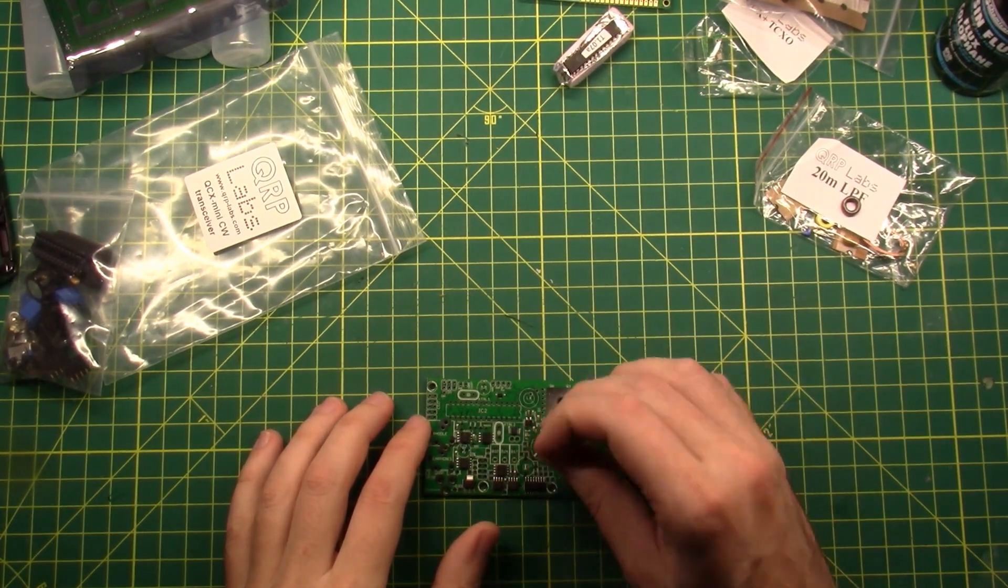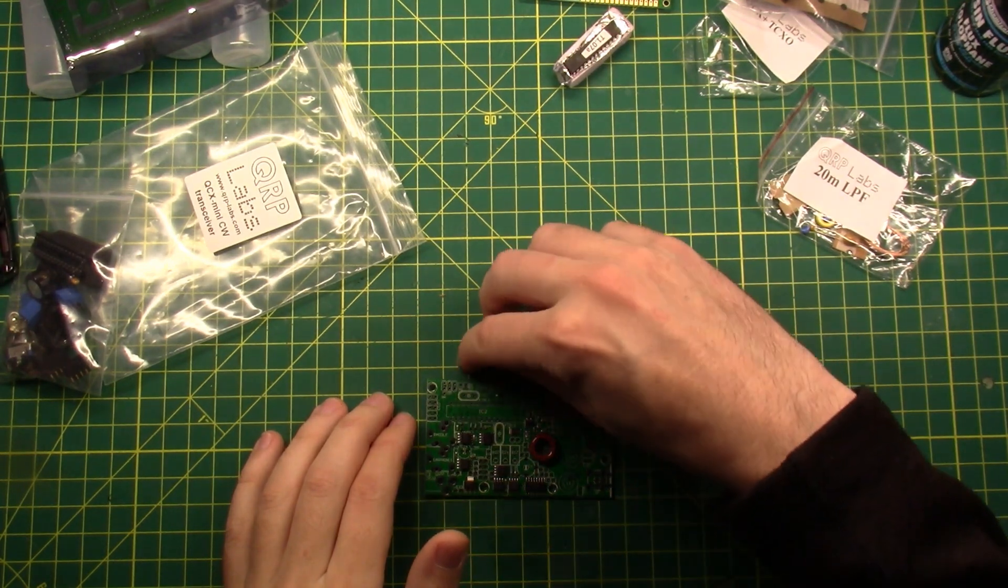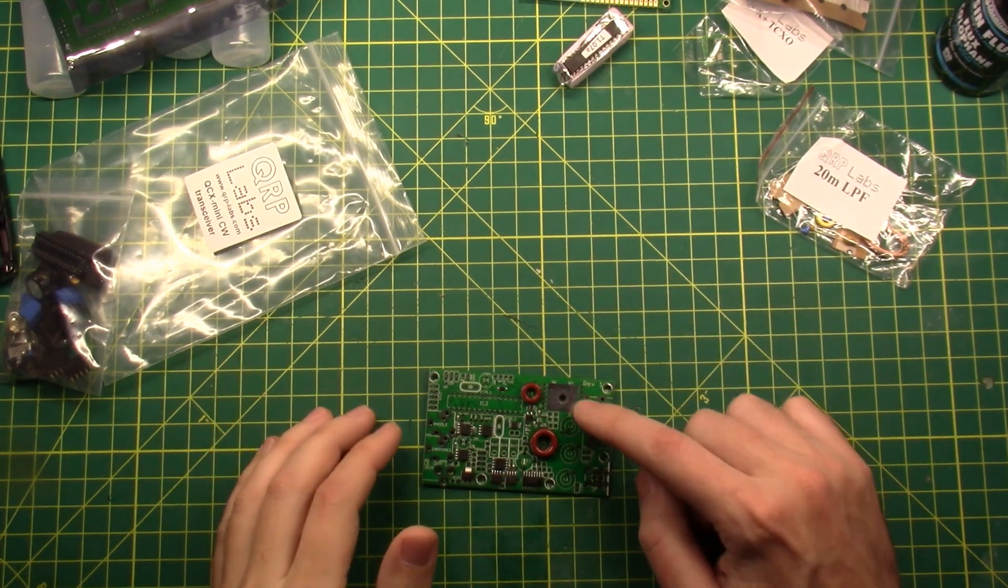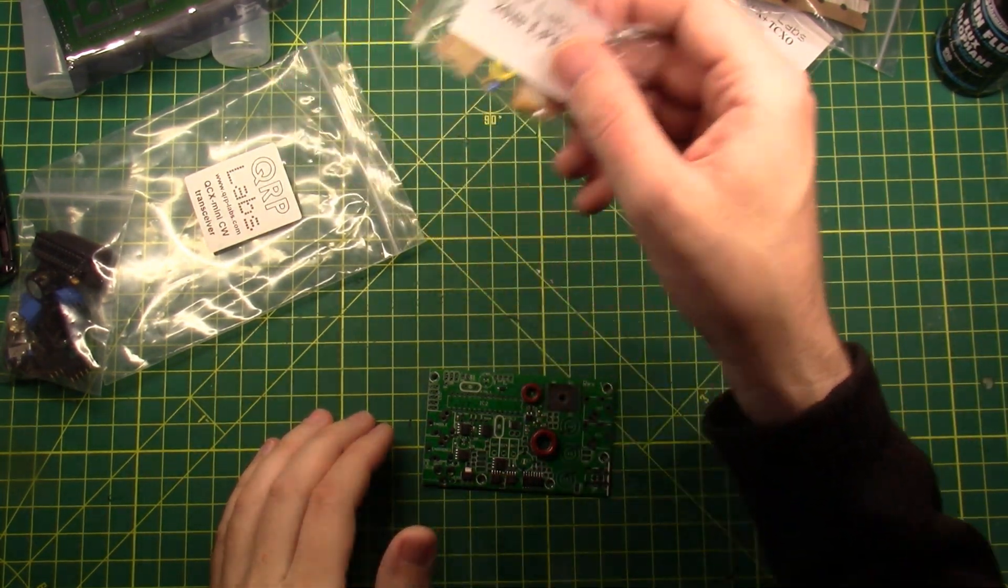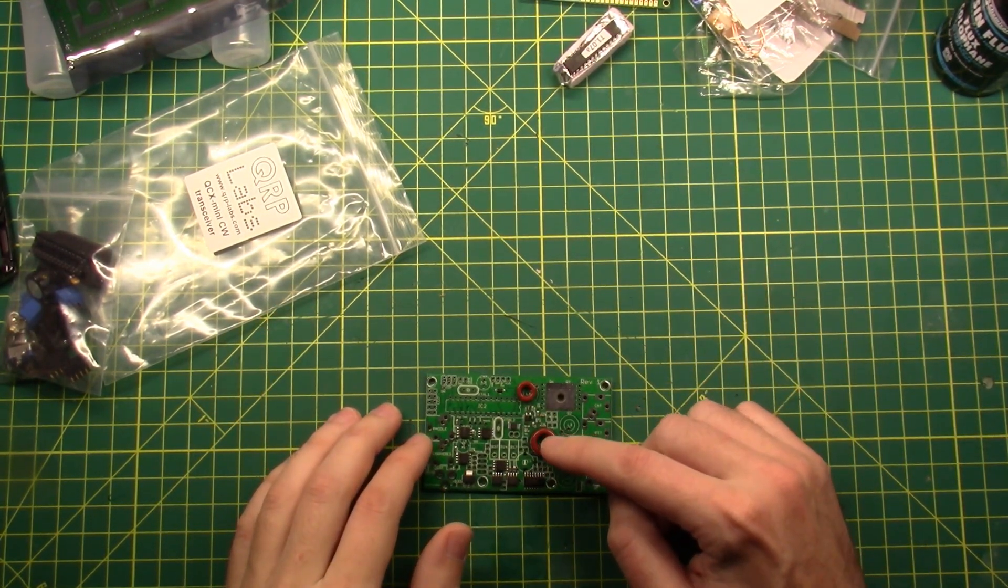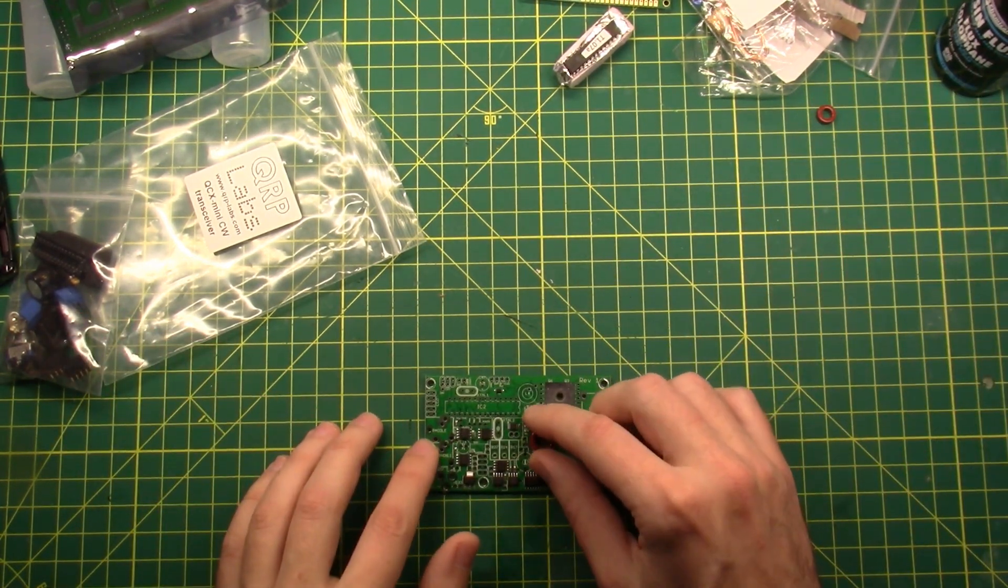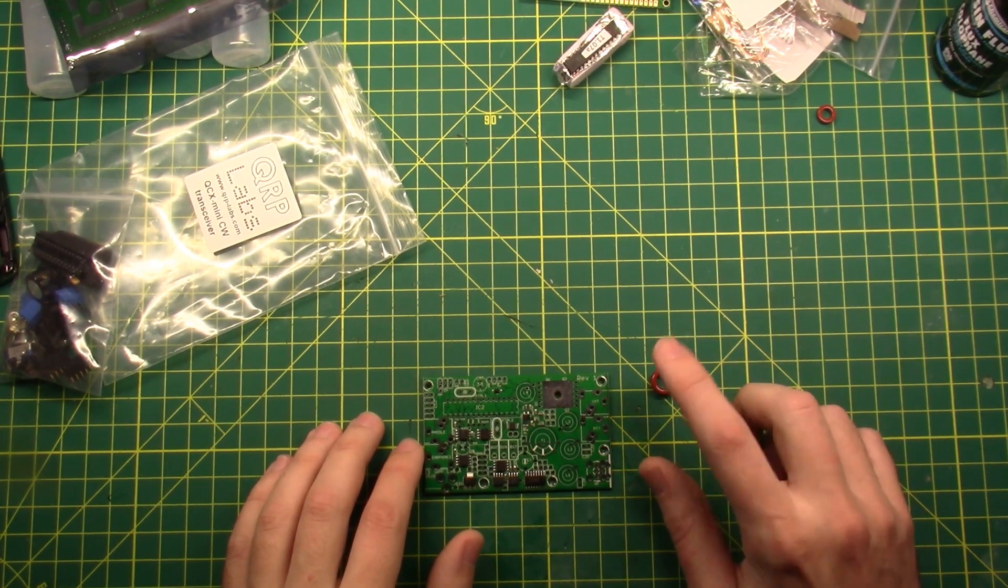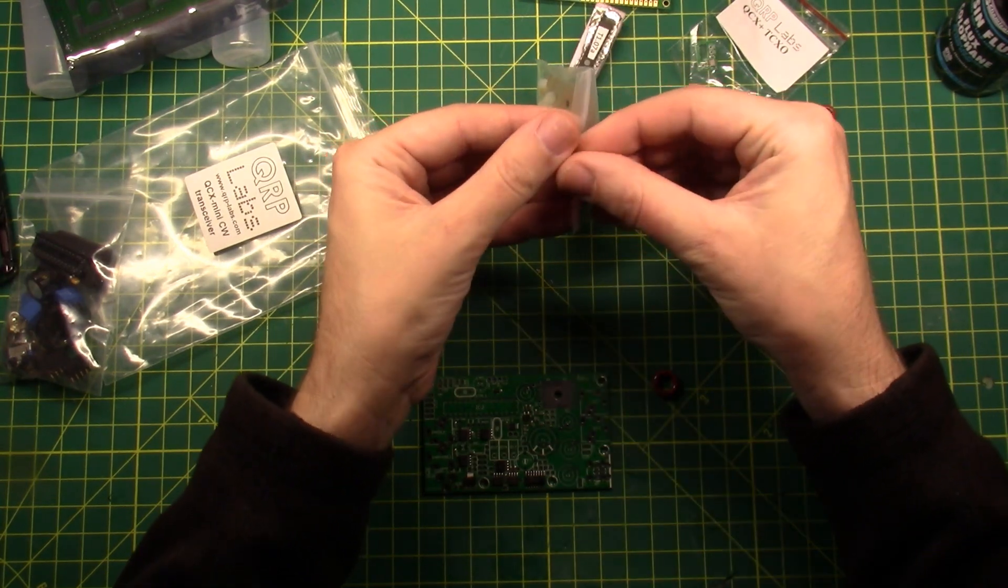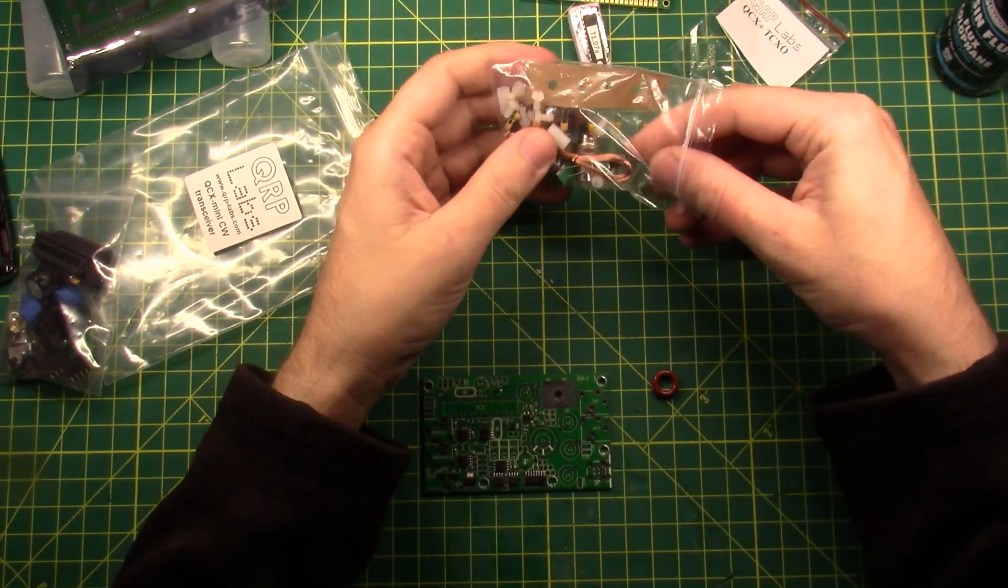I'm going to put my extra screws into my parts tray. This is the low pass filter, and there are three yellow toroids in there. A quick look at the instructions says this is a T50-2, and this is a T37-2. So those are the two that we need for this part of the kit. This is instruction number two. The instructions are fantastic.